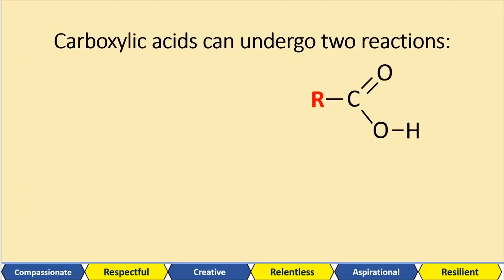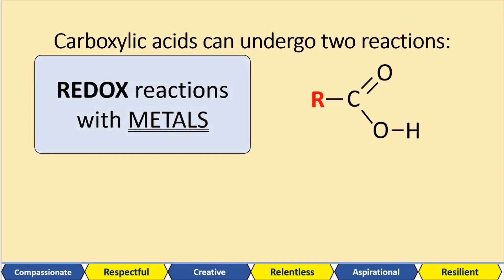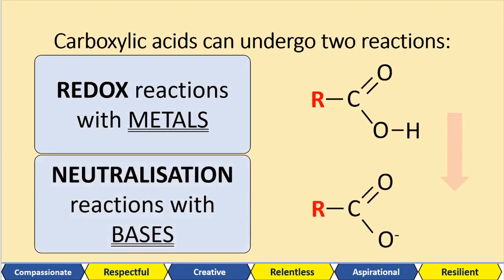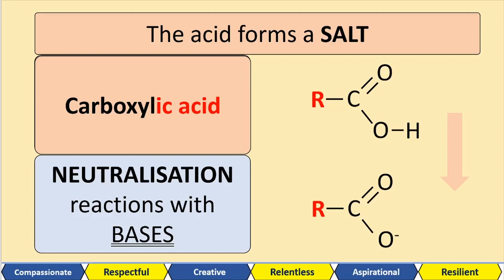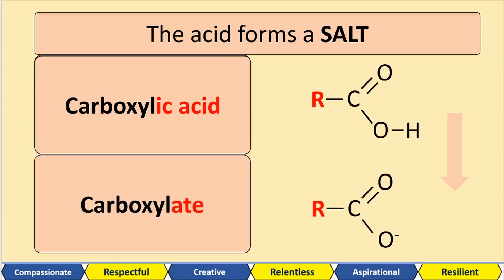Carboxylic acids can undergo two reactions: redox reactions with metals, and neutralization reactions with bases. Acids form salts — we're losing that hydrogen, which is what acids do, forming a negative ion. Look at the word carboxylic acid: the salt that's formed is a carboxylate ion. Keep that at the back of your mind — we're obviously going to use it later.